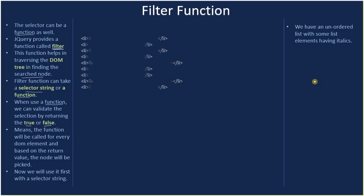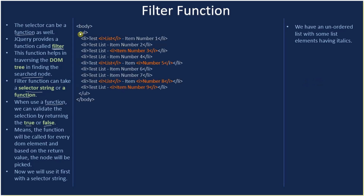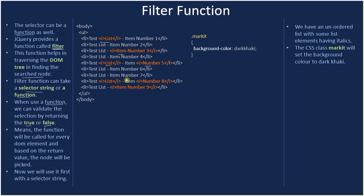We have an unordered list with list elements, some of which contain italic tags. Some list elements have more than one italic tag, and these italic tags are highlighted. We also have a CSS class called 'mark' that sets the background color to dark khaki — you can apply this class to any element to set its background to dark khaki.